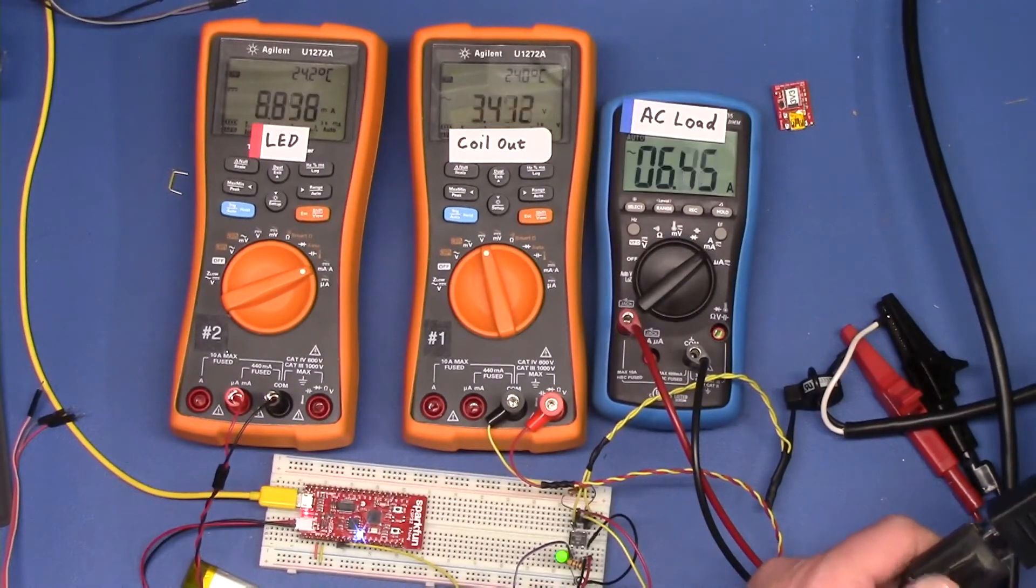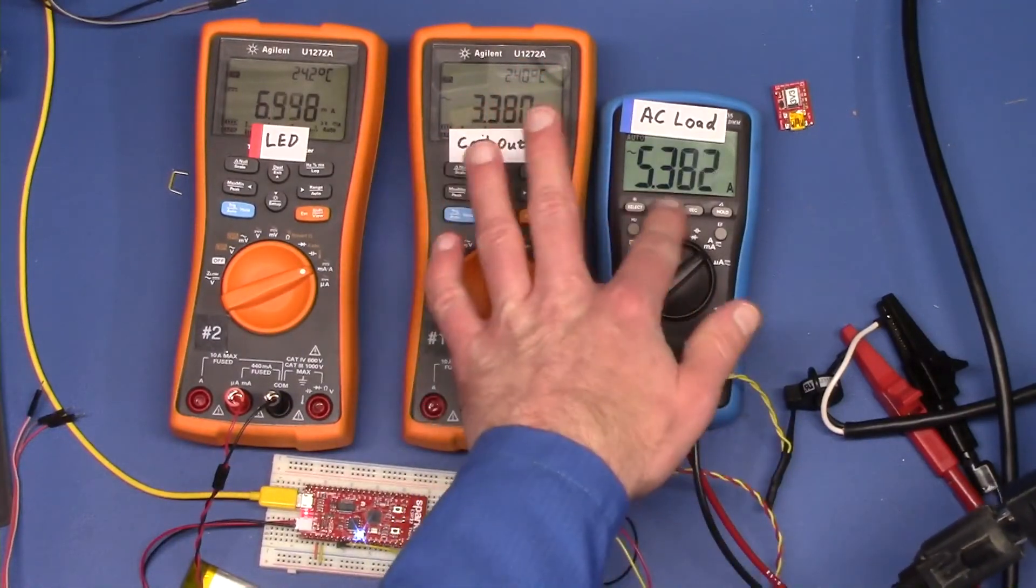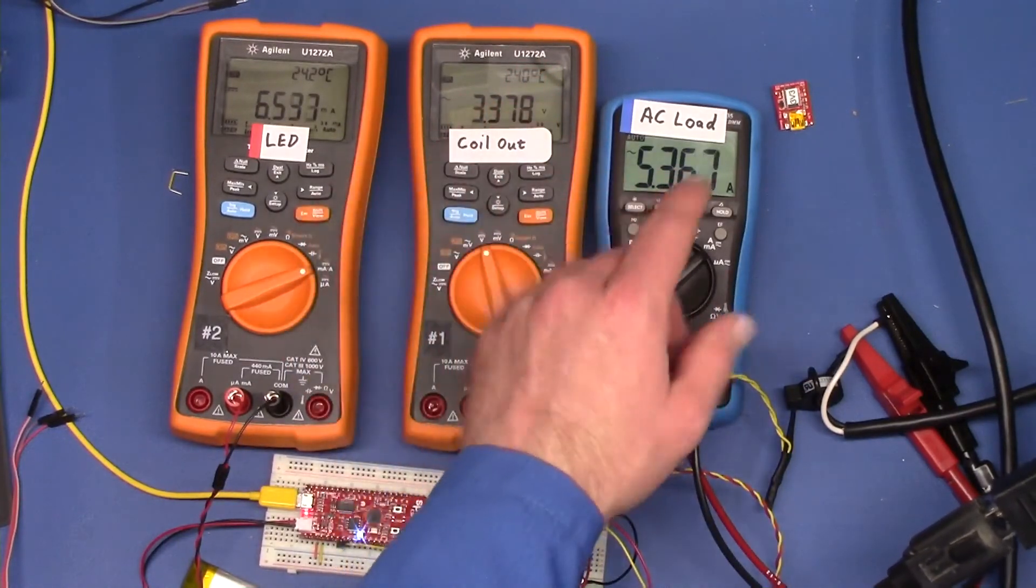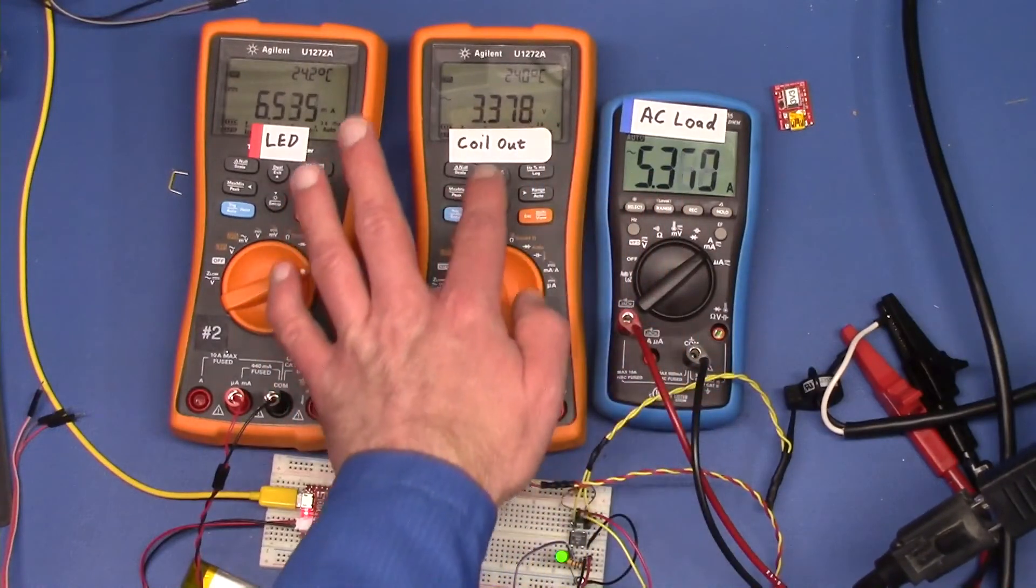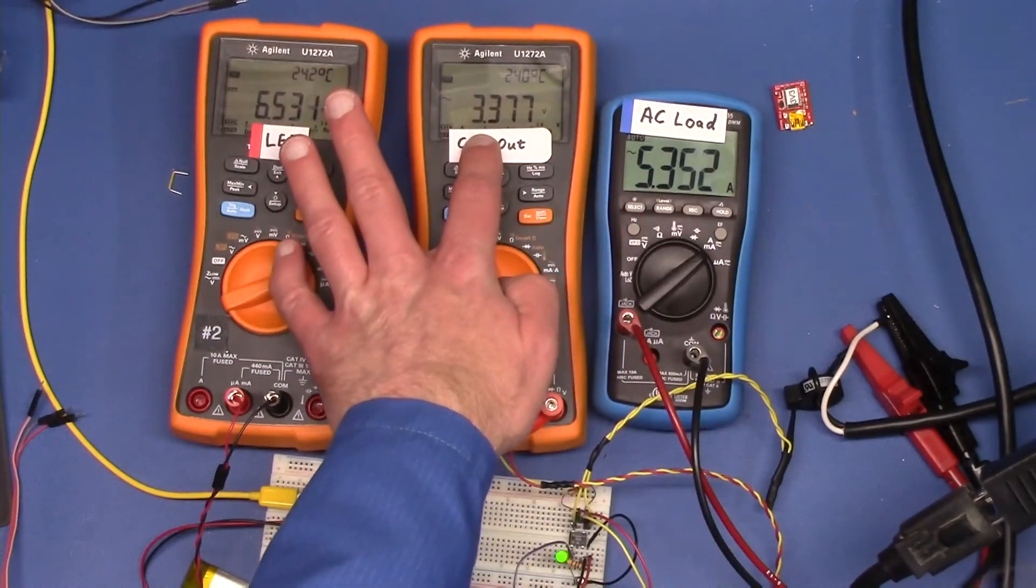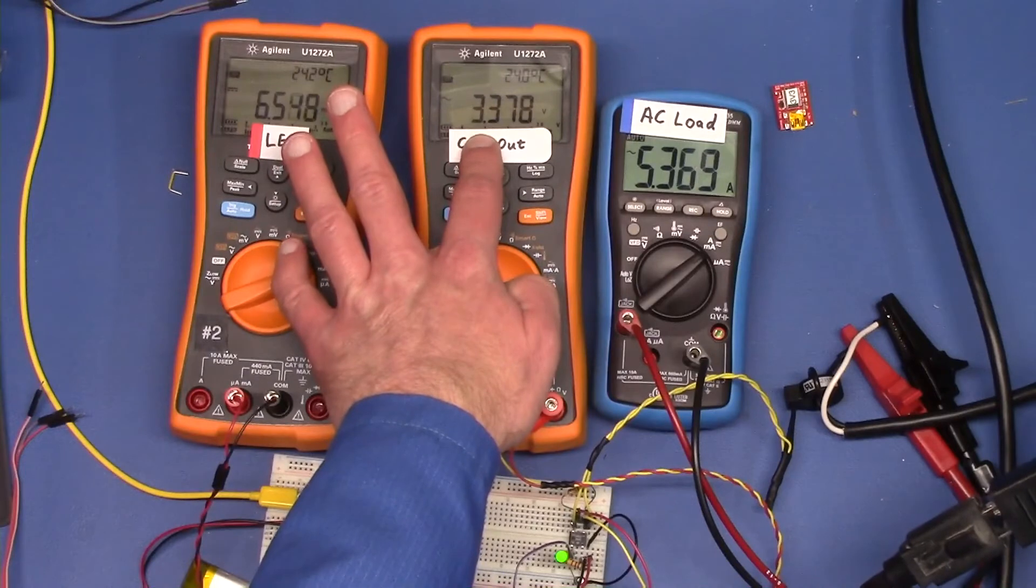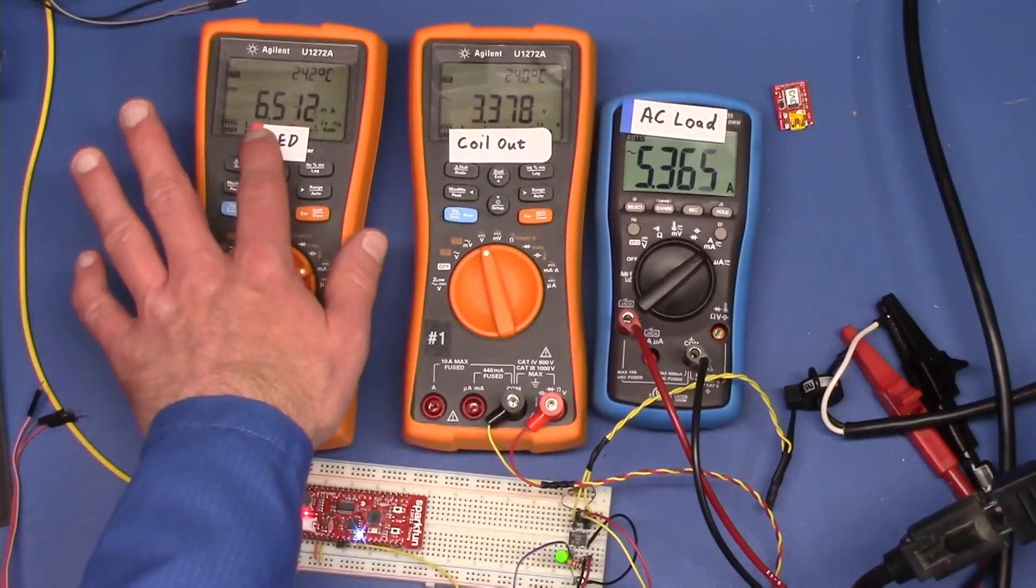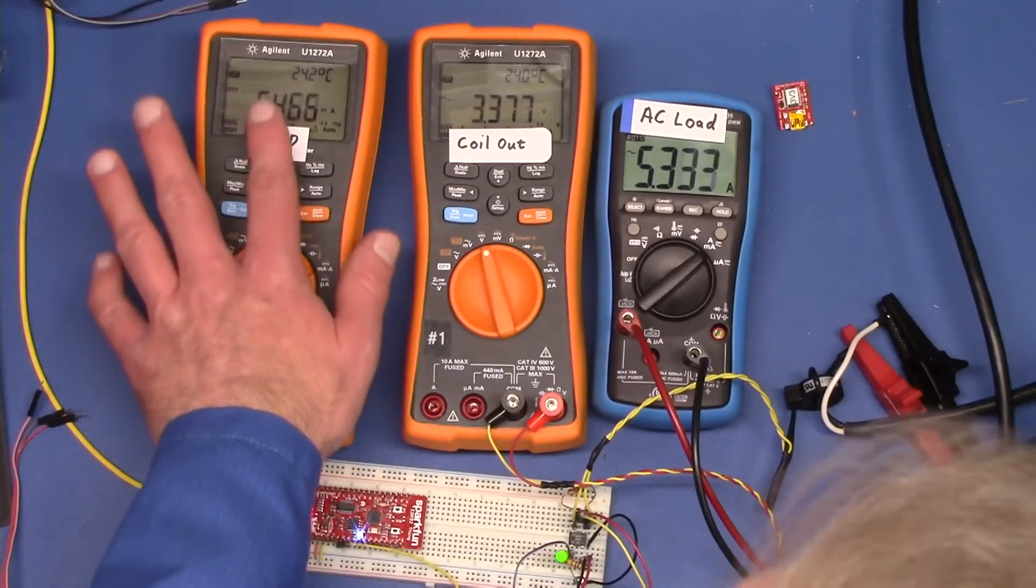All right. Well, we've got five amps coming through here and that pump gets noisy when it's running dry. The coil output is only three volts, 3.3 AC, but that's under load and we have six and a half milliamps of power through the LED.